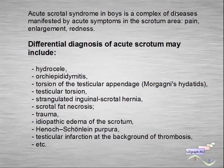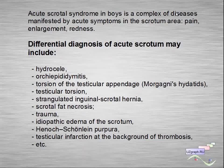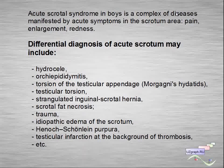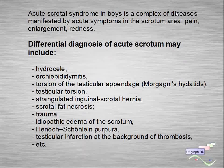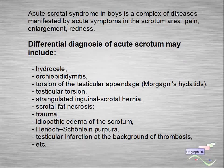Acute Scrotal Syndrome involves a complex of diseases manifested by acute symptoms in the scrotum area: pain, enlargement, and redness. Differential diagnosis of acute scrotum may include hydrocele or epididymitis, torsion of the testicular appendage, testicular torsion, strangulated inguino-scrotal hernia, scrotal fat necrosis, trauma, idiopathic edema of the scrotum, Henoch-Schönlein purpura, testicular infarction due to thrombosis, and others.